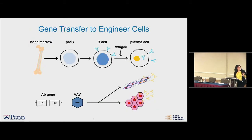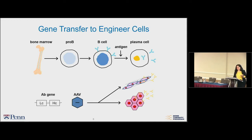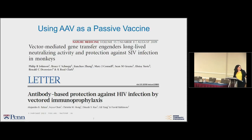Changing gears, we're trying something different — using gene transfer to engineer cells in the context of infectious disease and antibody production. Typically, antibody production occurs in the bone marrow through to antibodies secreted from plasma cells. What we wanted to do is encode the antibody chains — both light and heavy — into an AAV vector and have it secreted, as shown by Phil Johnson's group using AAV1 to secrete antibodies against SIV in macaques and from hepatocytes.